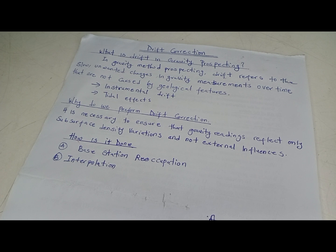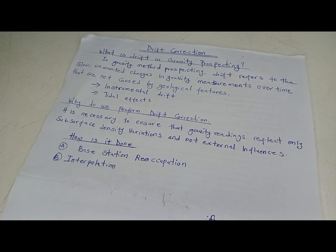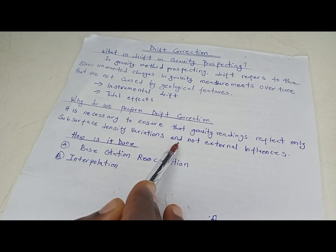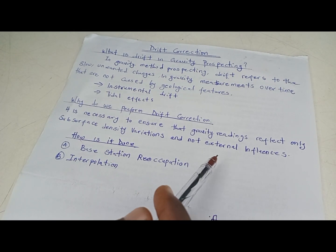The reason why we do the gravity method is to know the subsurface density variations. We don't want external factors like Earth tides or instrument effects influencing our readings. So one of the first corrections we are going to apply to our field readings is the drift correction. It is necessary to ensure that gravity readings reflect only subsurface density variations and not external influences.